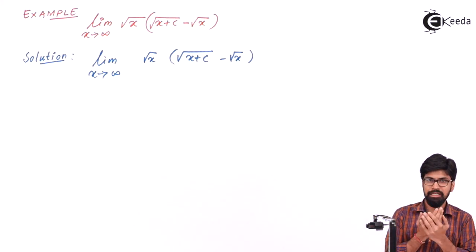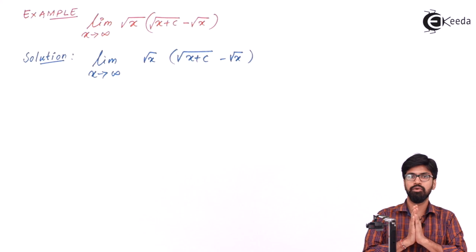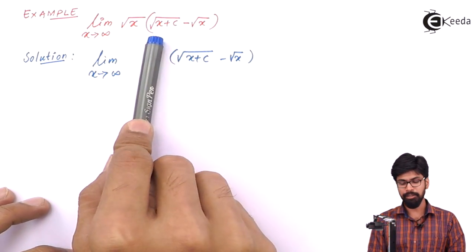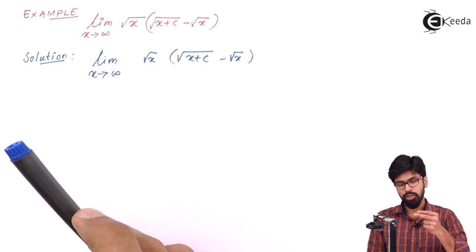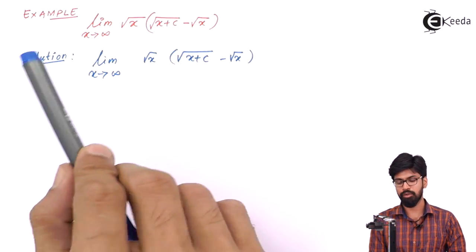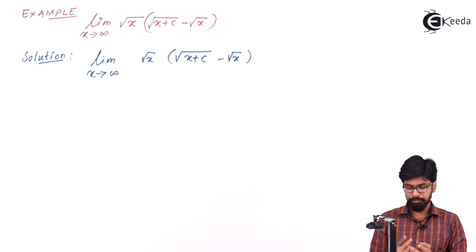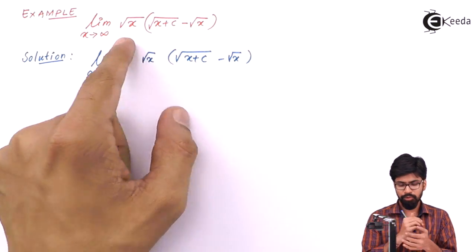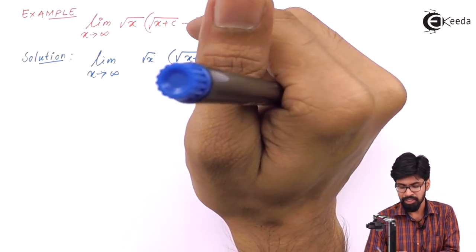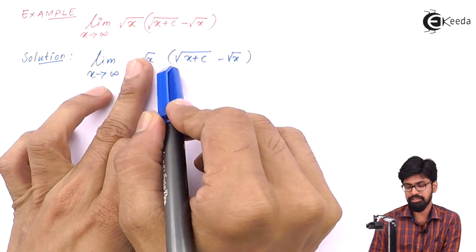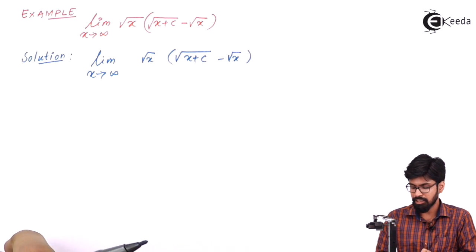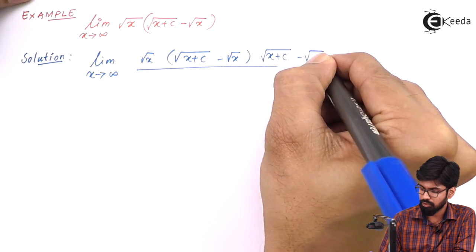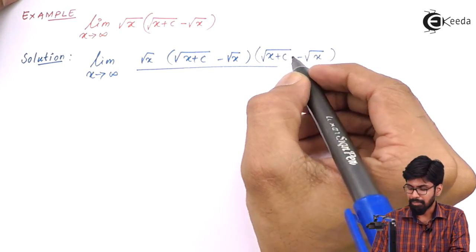As we have already learnt, whenever we see a square root factor, the first thing that should come to our mind is to rationalize that factor. Here, we have to find the limit of √x · [√(x+c) − √x] as x approaches infinity. There are two square root factors. One is √x and the other is [√(x+c) − √x]. We keep aside √x and rationalize the second factor, whose rationalizing factor is √(x+c) + √x.